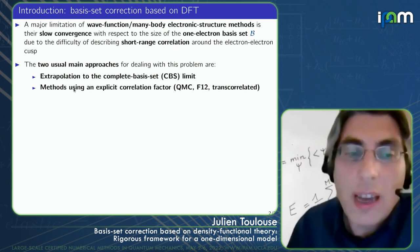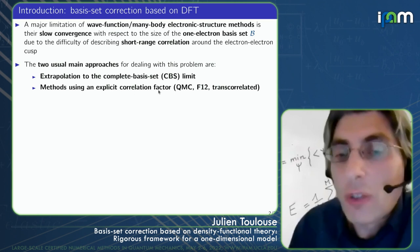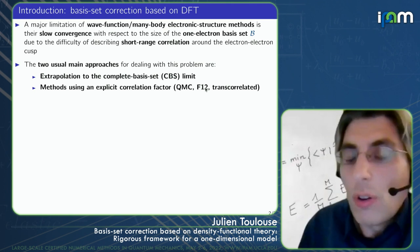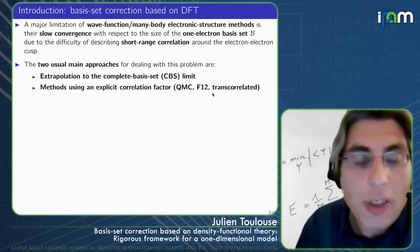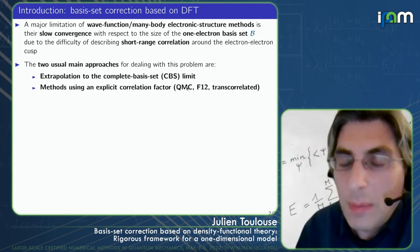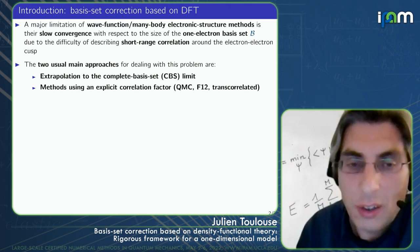Another family of methods uses an explicit correlation factor, also called a Jastrow factor. There are different ways of taking this into account: you can do quantum Monte Carlo, or with a simple Jastrow factor you can do the F12 method or the transcorrelated method. But these are also complicated — you need to do it either stochastically or with an auxiliary basis.